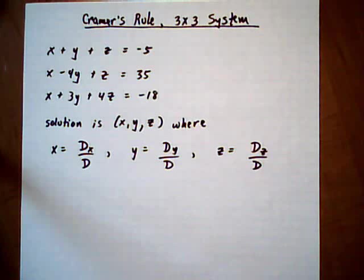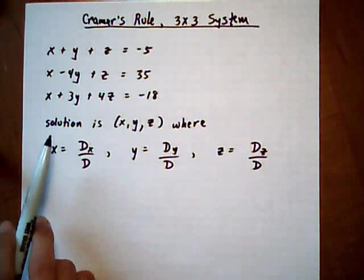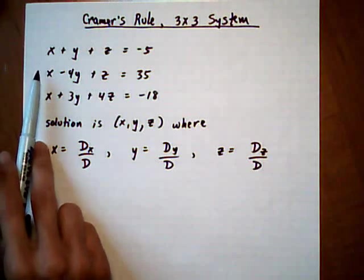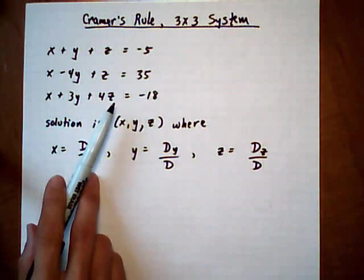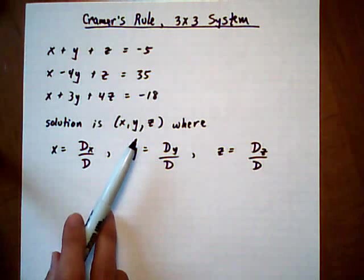Solve a 3x3 system of linear equations by Cramer's Rule. Here's our 3x3 system. So we have three equations that contain three variables: x, y, and z. We want to find the solution, which is an ordered triple x, y, z.